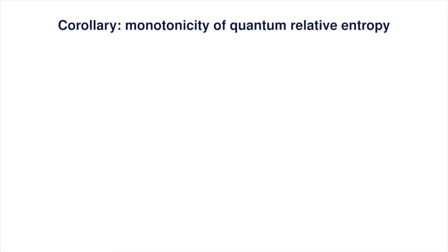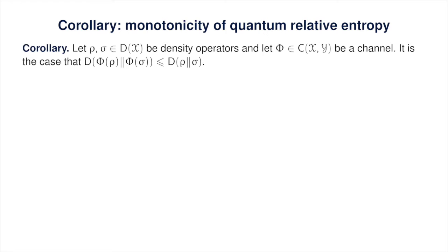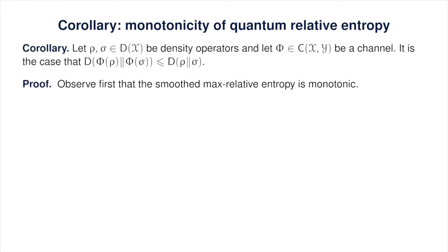Before we get to the proof of the main theorem, let's first observe a rather spectacular corollary: the ordinary quantum relative entropy is monotonic with respect to the action of any channel. We do already know this to be true — it's a consequence of the joint convexity of quantum relative entropy — but proving joint convexity is highly non-trivial, and here we obtain an alternative proof that follows a very different route. Compared to the proof covered in the predecessor course, it's not clear that one proof wins in terms of simplicity, but some of you may find the proof from this lecture simpler and more appealing.